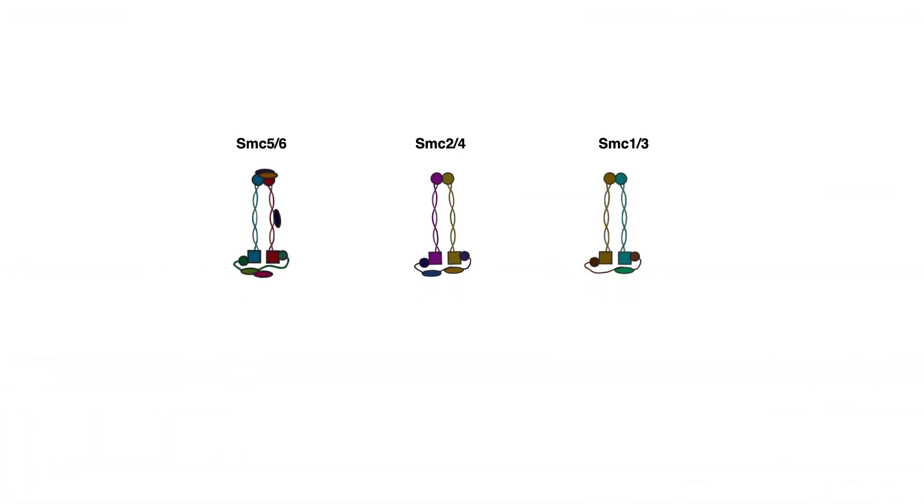In higher eukaryotes, there are three major classes of SMC structural maintenance of chromosome complexes: SMC56, SMC24, and SMC13. SMC24 is involved in the condensation of chromosomes, that's why it's got its own name, condensin, whereas SMC13 is also known as cohesin, because it is involved in sister chromatid cohesion and chromosome organization.